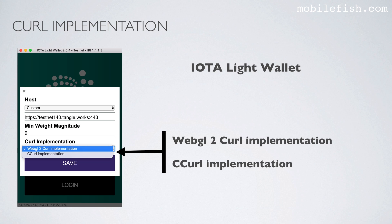Let's start with what we mean by curl implementation. This is the IOTA LiteWallet and you can choose between two curl implementations: the WebGL 2 curl implementation and C curl implementation. I am not sure if this option is available in the new IOTA Trinity Wallet.